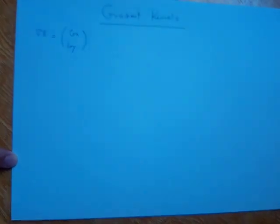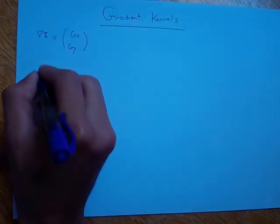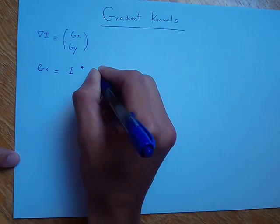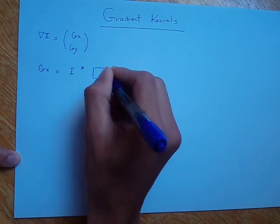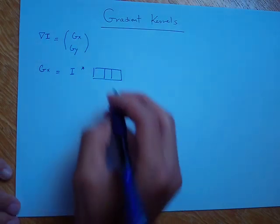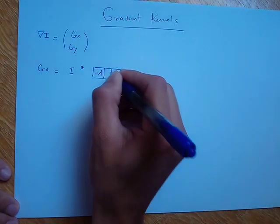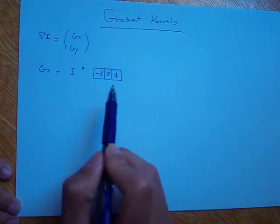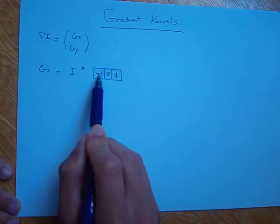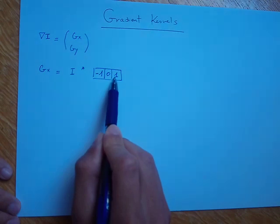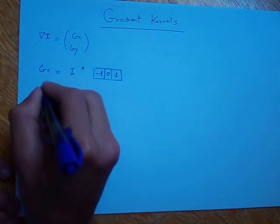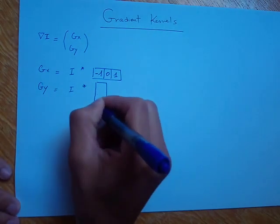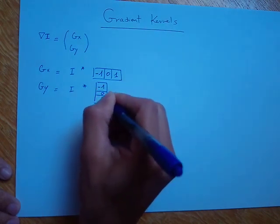The first kernel is a one-dimensional kernel. For gx, it can be obtained by convolving the image with a one-dimensional kernel that computes the derivative in the x direction, which is: minus 1, 0, 1. The direction of the derivative goes from the negative to the positive number. To get the gy component, we convolve the image with a vertical one-dimensional kernel: minus 1, 0, 1.